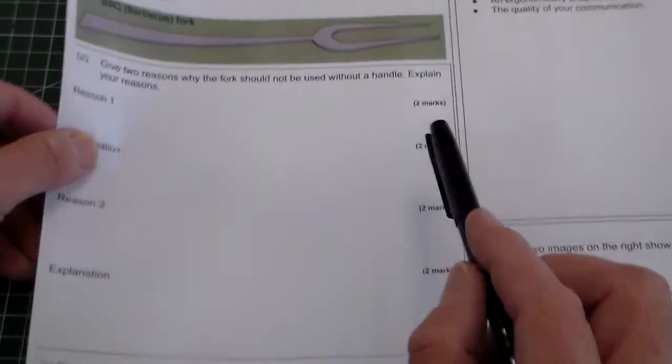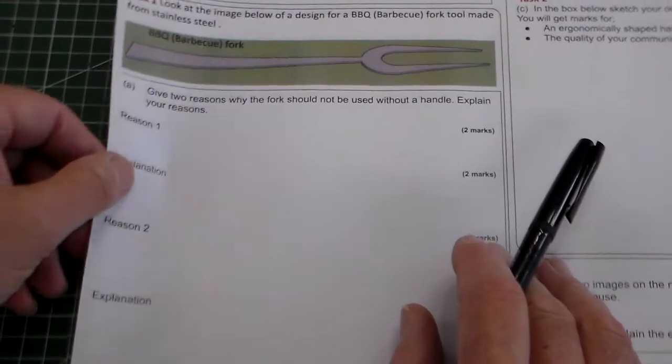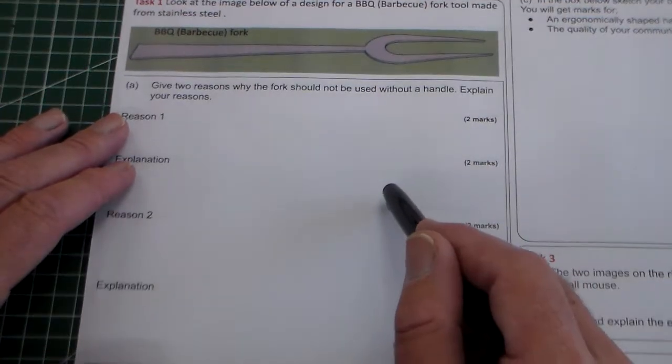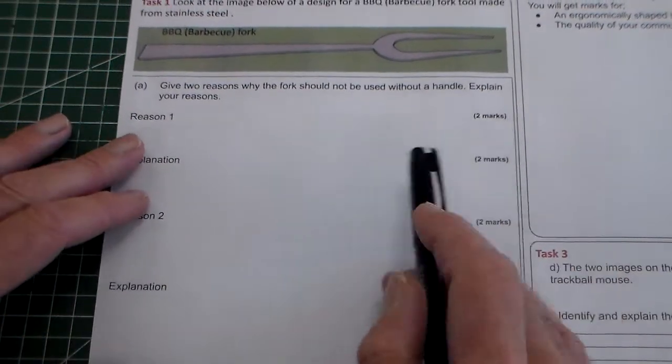So we know this is stamped from three millimeter stainless steel and it says give two reasons why the fork should not be used without a handle. Explain your reasons.